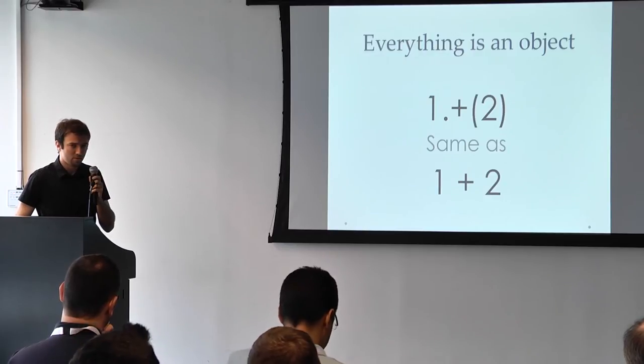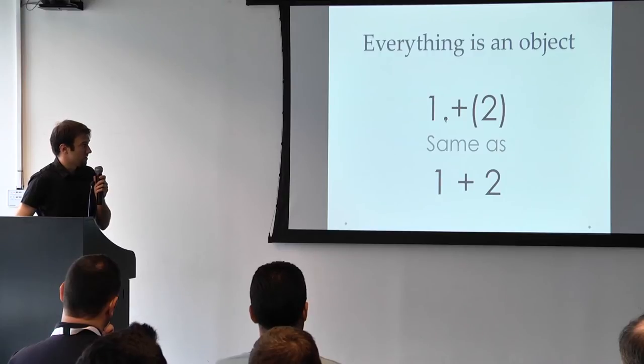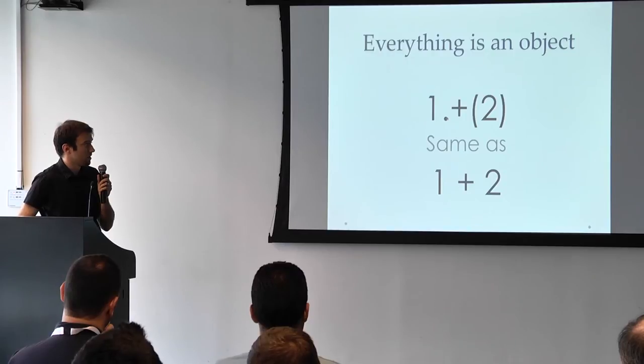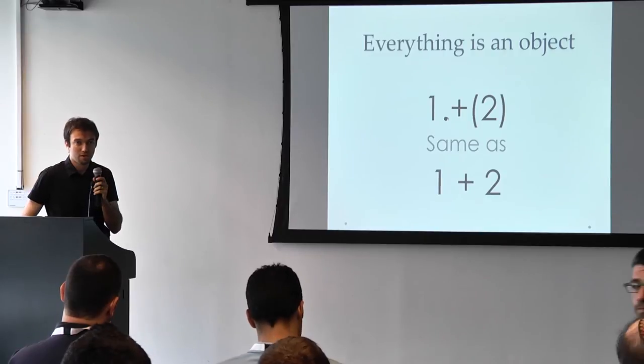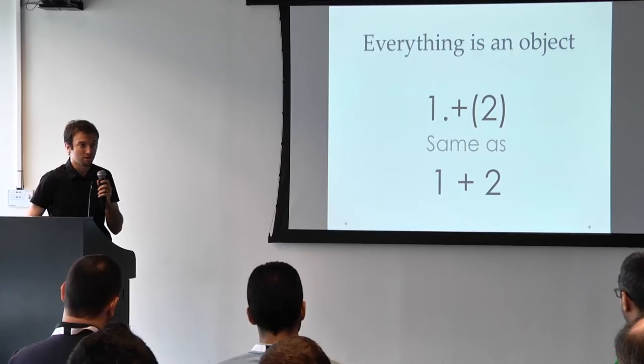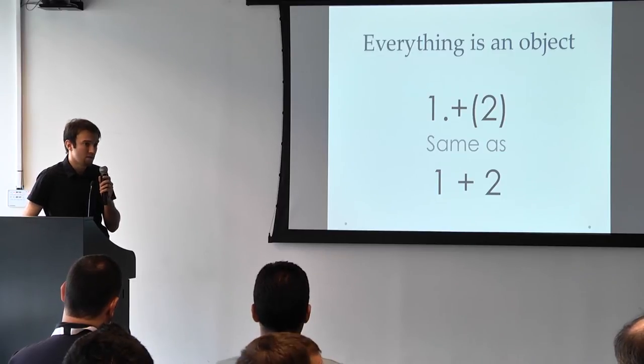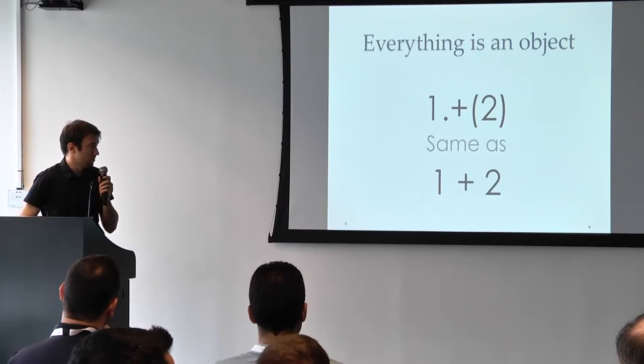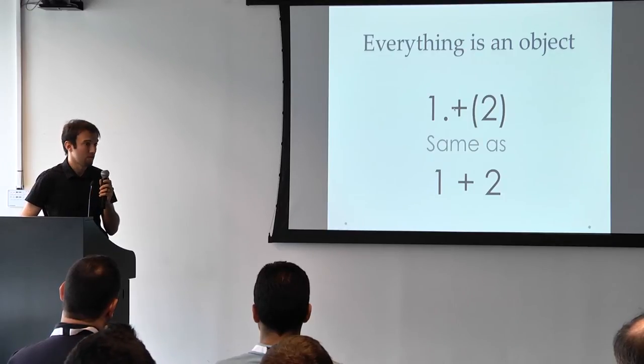Everything in Scala is an object. It's something that you might be familiar with from Smalltalk and some other languages. Which means that actually when I write one plus two, I'm actually invoking a method named plus on this object. It doesn't mean that behind the scenes we have boxing. It feels object-oriented, but it actually compiles to the same bytecode as what you would expect the equivalent Java code to compile to. But it actually allows us to do much more. For example, the plus operator, since it's an operator in Java, it's not even visible through reflection. And you can reflect the plus method in Scala because it's just another method.